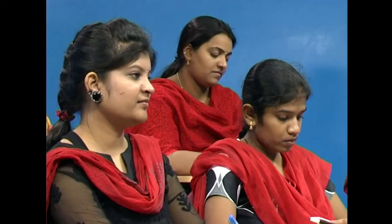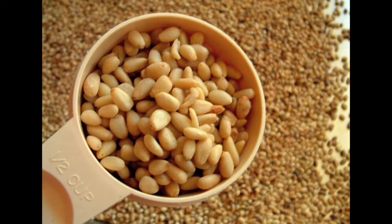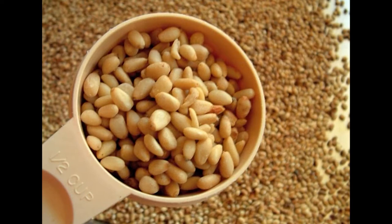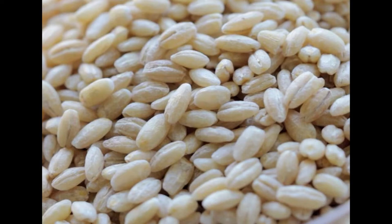Enzymes found in cereals include amylases, proteases, lipases and oxidoreductases. Upon germination, alpha-amylase activity increases. Now let us look at specific cereals. Barley belongs to the genus Hordeum. The biological value of barley protein is less than that of wheat. Barley has very little gluten and good quality bread or chapatis cannot be produced from barley.